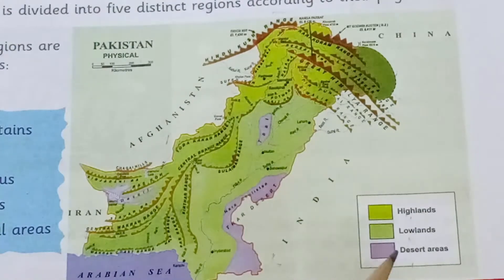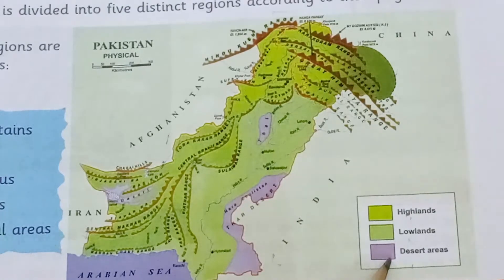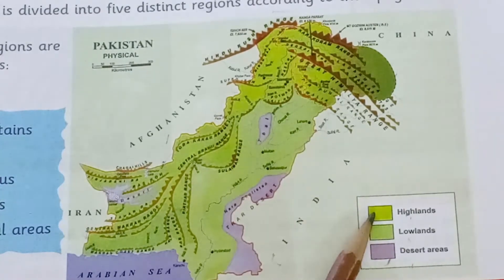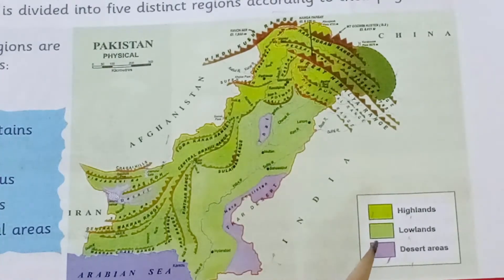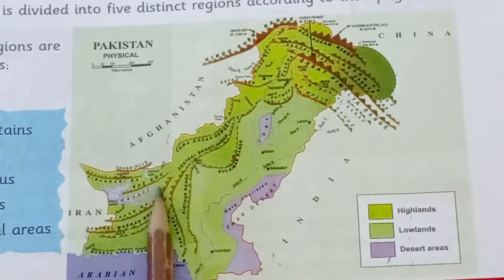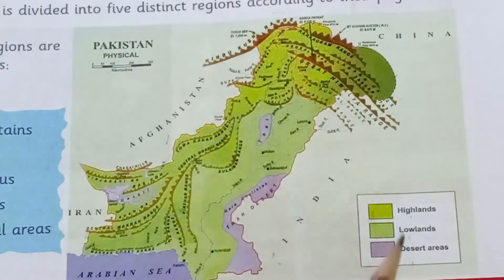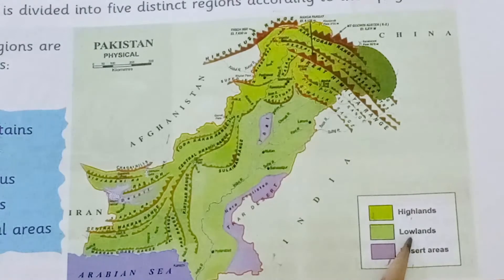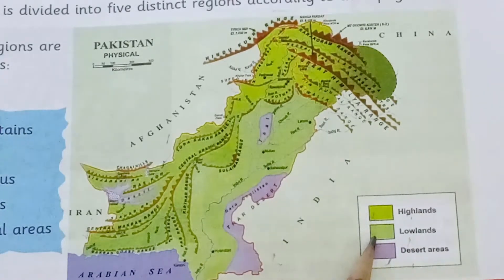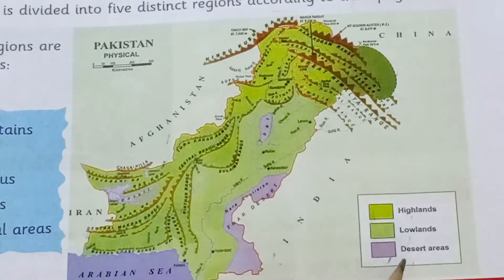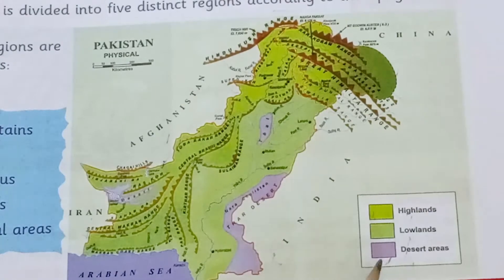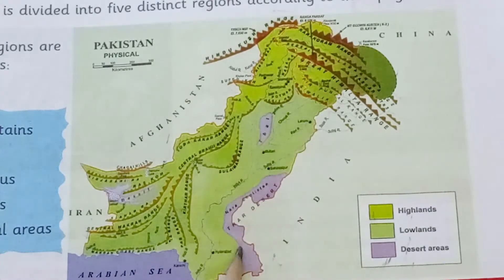Now look at this map showing highlands, lowlands, and desert areas. Highlands kya hote hain? Jo ilaqe Earth ki surface se oopar hote hain — jaise mountains wale ilaqe. Map mein dark green color se highlands show kiye gaye hain. Lowlands — nisheebi ilaqe — jahaan light green color hai, wo lowlands hain. Desert areas — sehra'i ilaqe — ko purple color se show kiya gaya hai. Map mein jahaan purple color hai, wo desert areas hain.